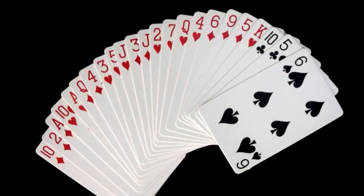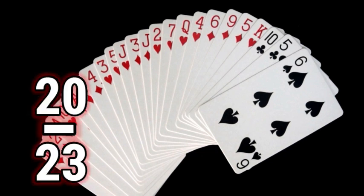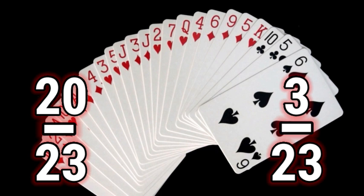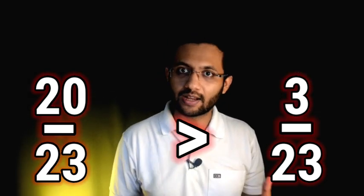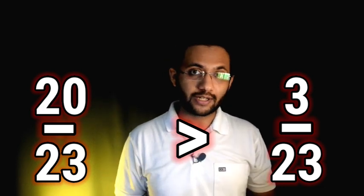But that doesn't mean every time if I draw a card it will be red, but we can say there are pretty good chances of picking red cards because they are more. In mathematical language, there is a probability of 20 upon 23 that you will draw a red card and 3 upon 23 to draw a black card. 20 upon 23 is always greater than 3 upon 23, hence the probability of picking a red card is more.